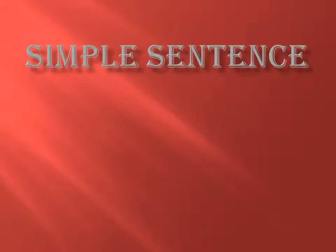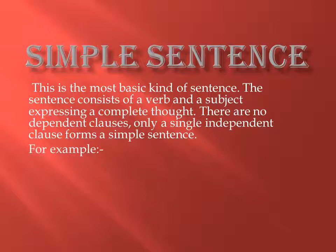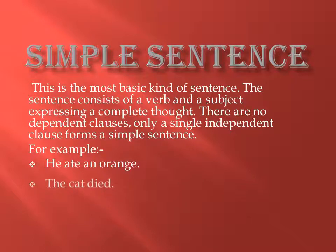Number one is simple sentence. This is the most basic kind of sentence. The sentence consists of a verb and a subject expressing a complete thought. There are no dependent clauses — only a single independent clause forms a simple sentence. For example: He ate an apple or orange. The cat died.